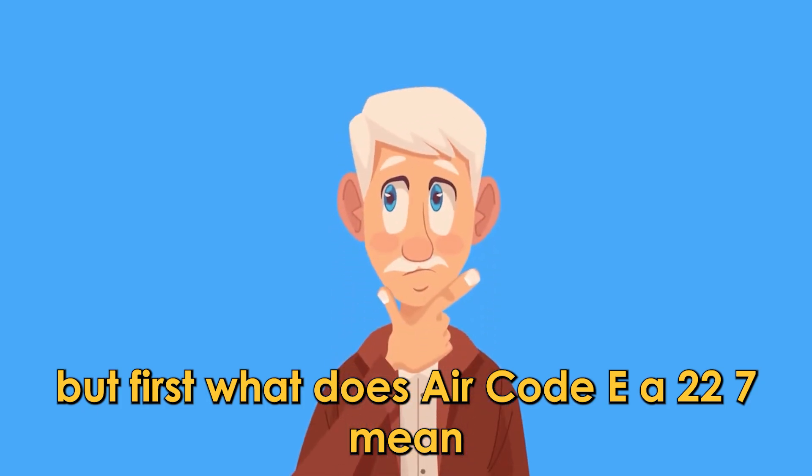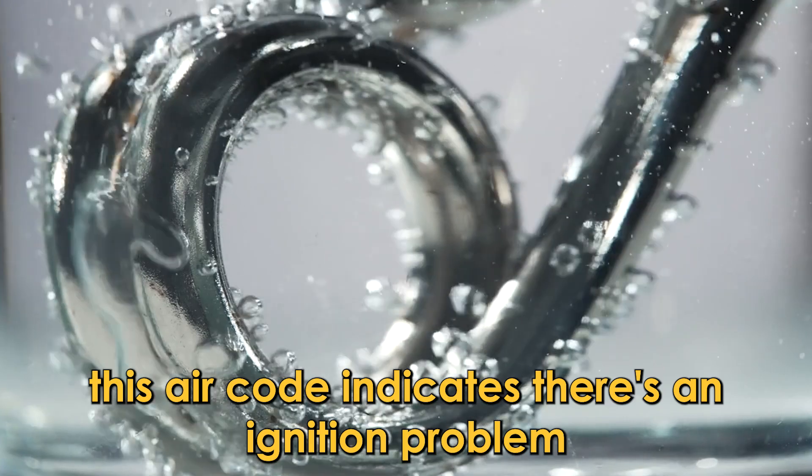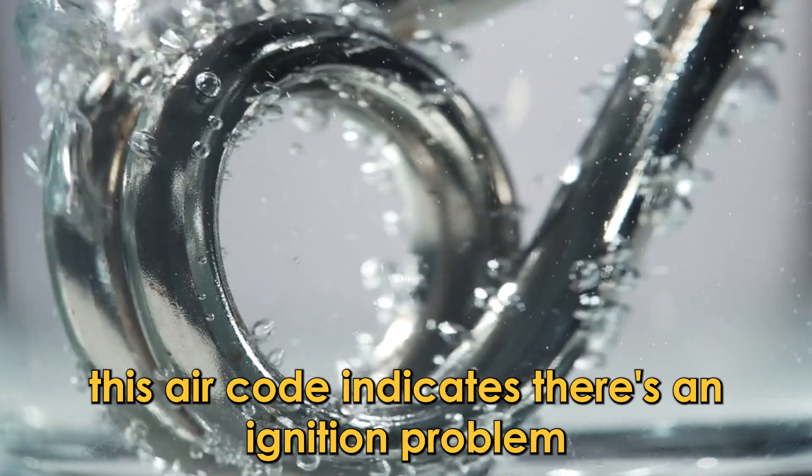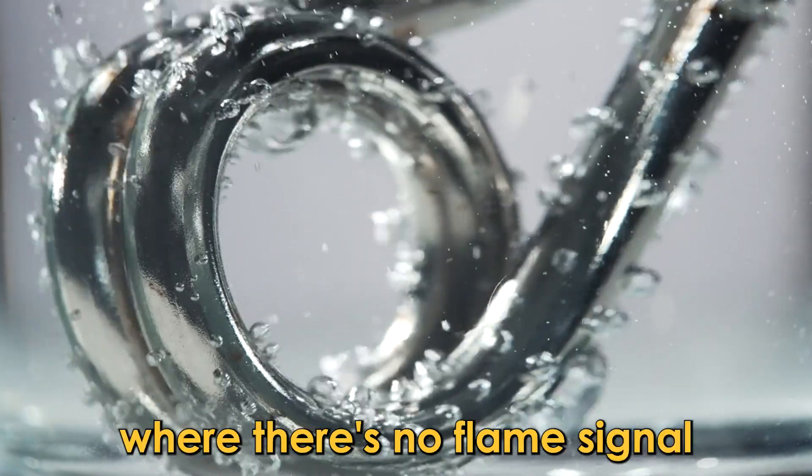But first, what does error code EA227 mean? This error code indicates there's an ignition problem where there's no flame signal.